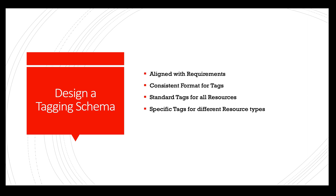Design a comprehensive tagging schema — this is super important. Develop a tagging schema that aligns with your requirements. It should include standard tags that apply to all resources and specific tags for different resource types or categories. For example, you may have tags like cost center, project, environment, owner, application, service level, team, or any other relevant attributes.